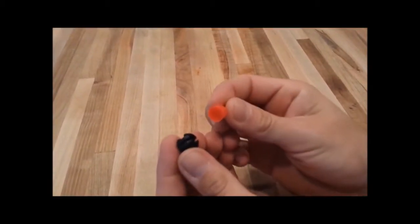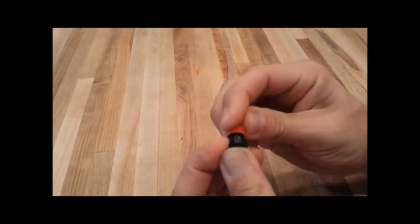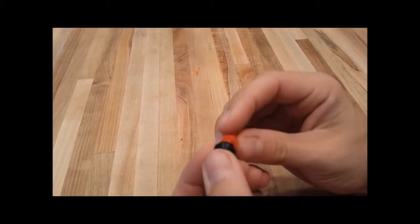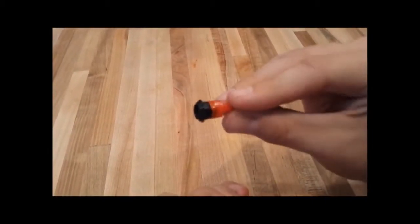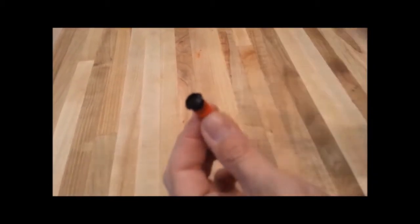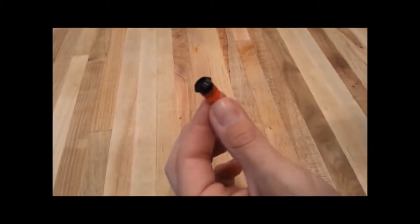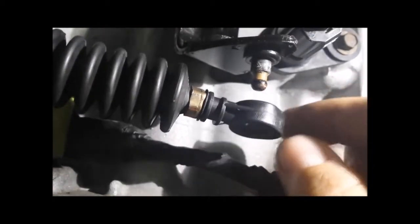Start by taking the bushing and pushing it into the installation tool like this. And after you remove all of the old bushing, if there's any left from the transmission cable, it should look like this.